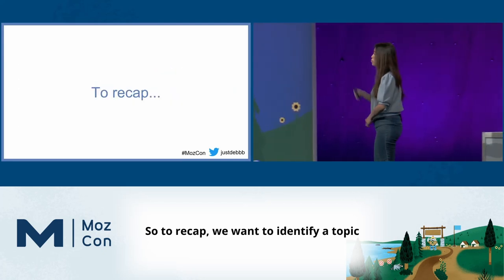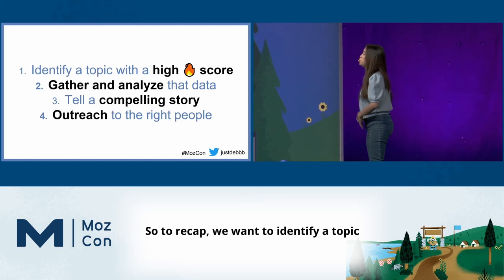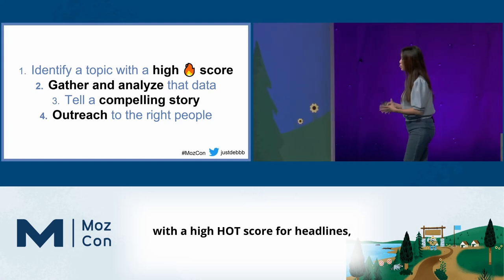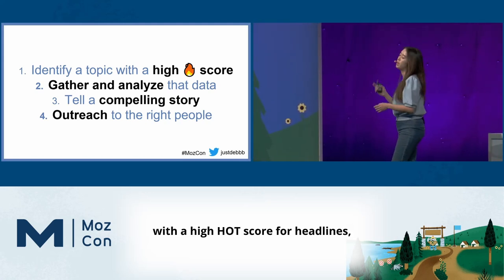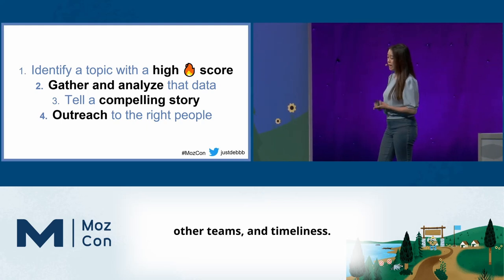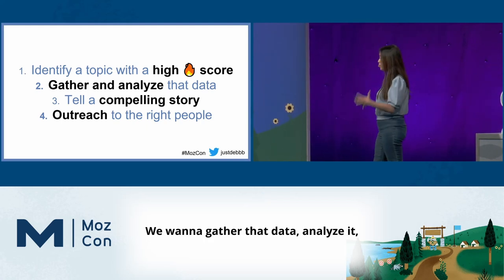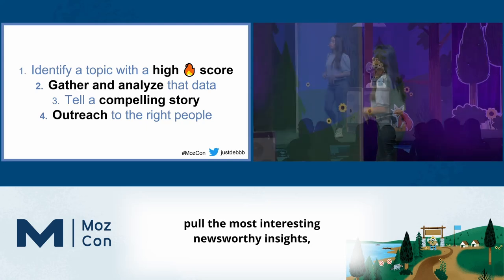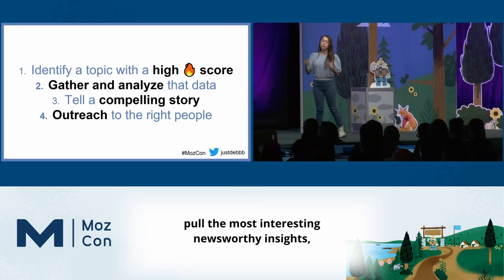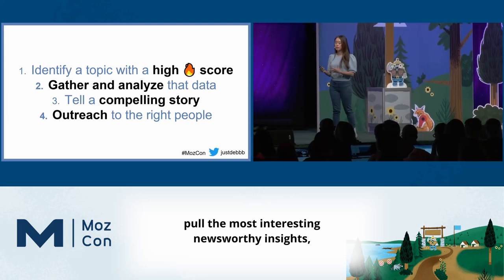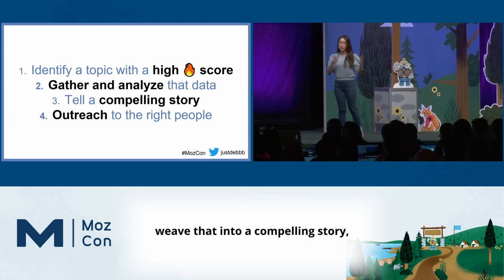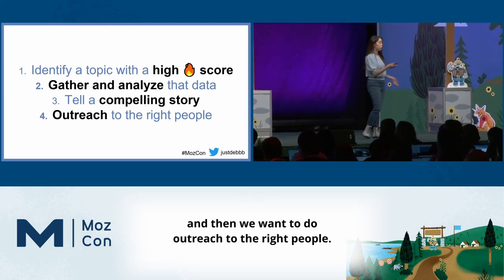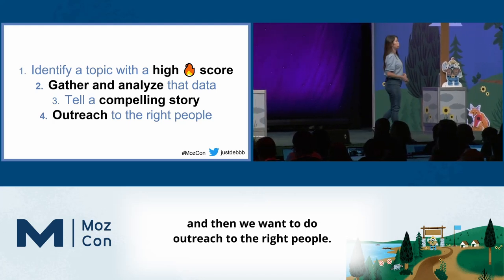So to recap: we want to identify a topic with a high HOT score for Headlines, Other teams, and Timeliness. We want to gather that data, analyze it, pull the most interesting newsworthy insights, weave that into a compelling story, and then we want to do outreach to the right people.